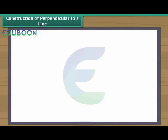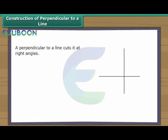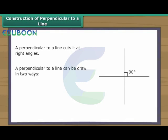Construction of perpendicular to a line. A perpendicular to a line cuts it at right angles. A perpendicular to a line can be drawn in two ways: through a point on the line, or through a point outside the line. Let us learn to construct perpendiculars in both ways.